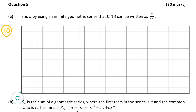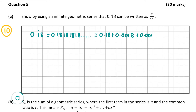The first thing to do is to write 0.18 with two dots above it as 0.1818181818 and so on, and now I'm going to rewrite that as 0.18 plus 0.0018 plus 0.000018 and so on. This is an example of a geometric series — we're adding all the terms together and each term is increasing by a multiple.